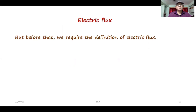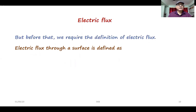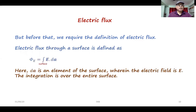But before that, we require the definition of electric flux. Electric flux through a surface is defined as phi_E equal to the integration over the surface of E dot dA. Here E as well as dA are vectors. dA is an element of the surface wherein the electric field is E. The integration is over the entire surface.